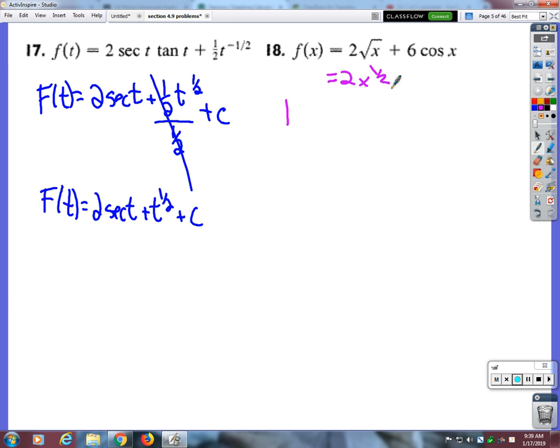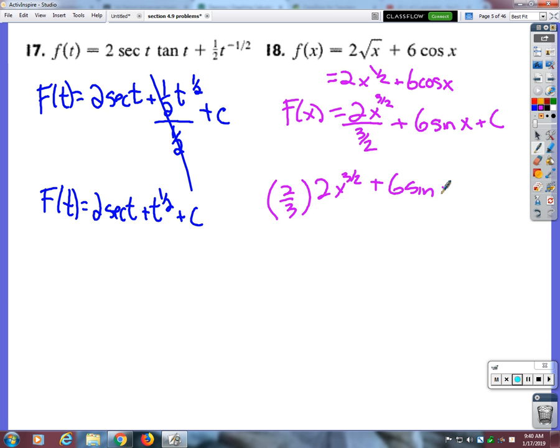Yep. You guys hear that? When there's a number in front of like a trig thingy and you're doing the anti-derivative, the number just stays there, it doesn't affect the problem at all. Okay, so for this one I have to rewrite it as 2x to the one-half. Okay, so what's the anti-derivative of 2x to the one-half? What do I do with that three halves? Multiply by the reciprocal. So if I take 2x to the three halves, yeah, and multiply it by two-thirds.